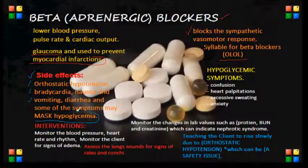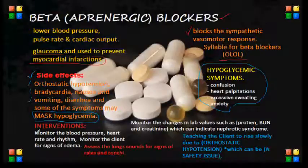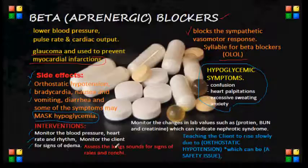Also, some of the symptoms that can mask hypoglycemia — hypoglycemic symptoms can include confusion, heart palpitations, excessive sweating, and anxiety. Nursing interventions for clients taking beta blockers: make sure to monitor the client's blood pressure, the heart rate, and the rhythm before administering the beta blocker drug. We also have to monitor the client's signs of edema, and the nurse should assess the lung sounds for signs of rales or rhonchi.